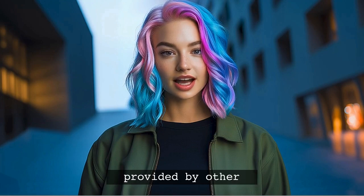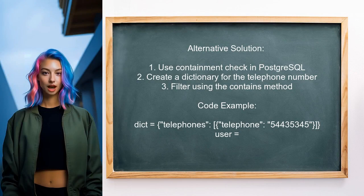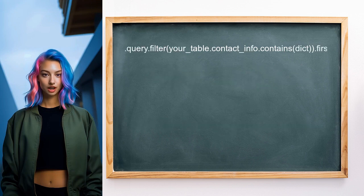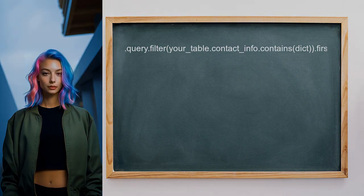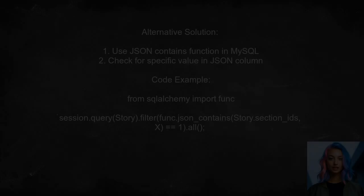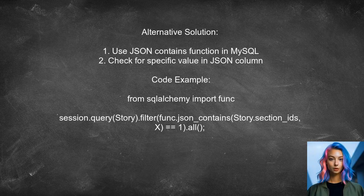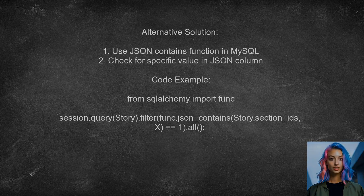Now let's look at the answers provided by other users. An alternative approach for filtering a JSON column in SQLAlchemy is to use the containment check in PostgreSQL with JSONB. You can create a dictionary that specifies the telephone number you're looking for and use the contains method to filter the rows. For MySQL, another user mentions using the JSON contains function, which checks if a specific value exists in a JSON column. You can use it in a query to filter results based on the presence of a telephone number.